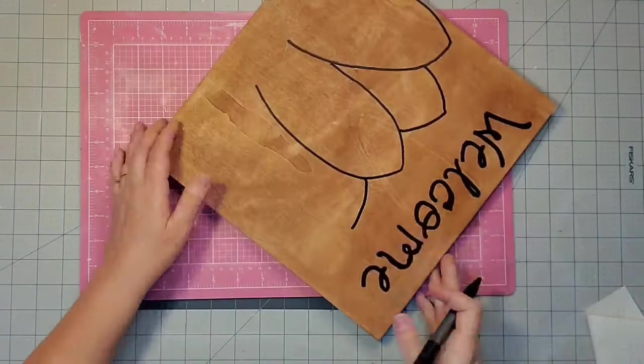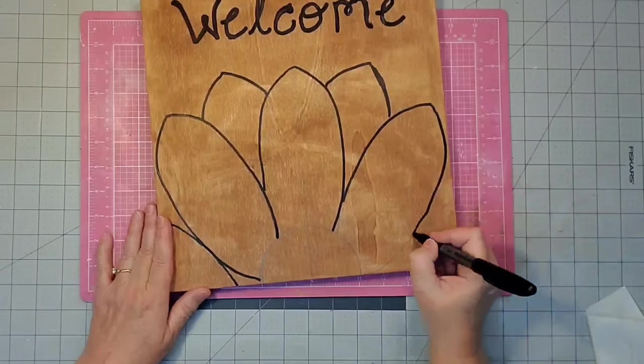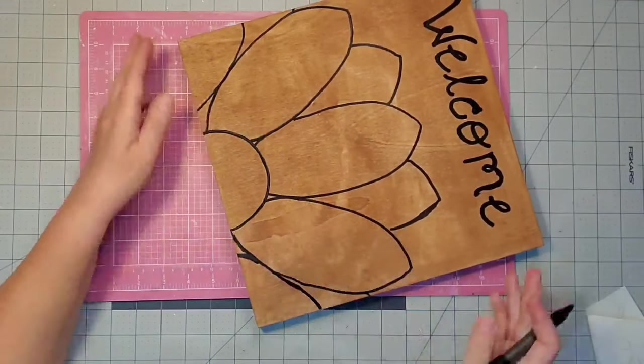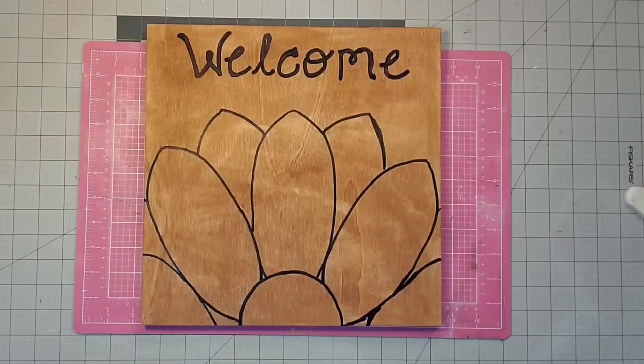For the flower, I'm using the fine point one, and I'm just going to trace out my entire flower across the board. Honestly, you do not have to be too careful at this time.